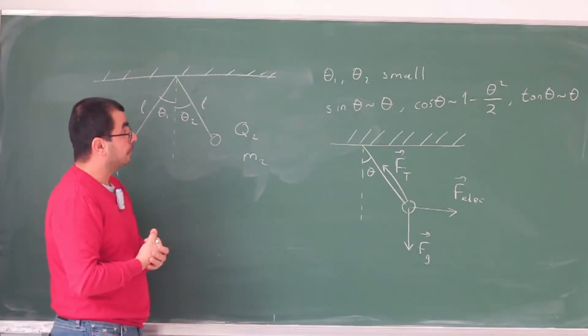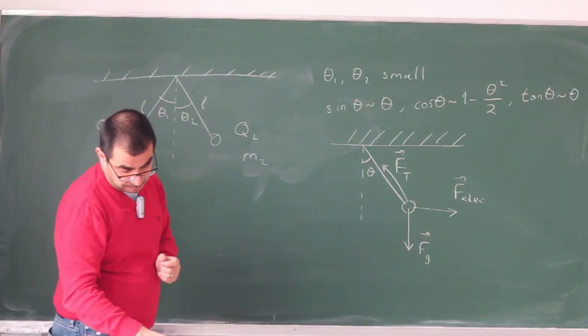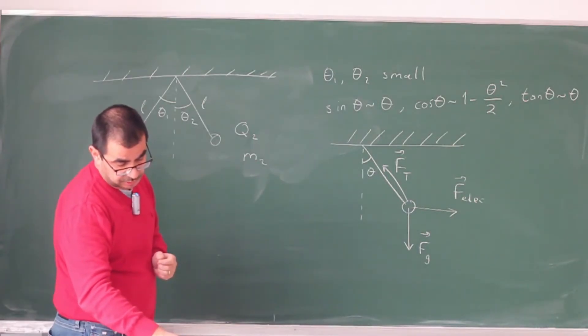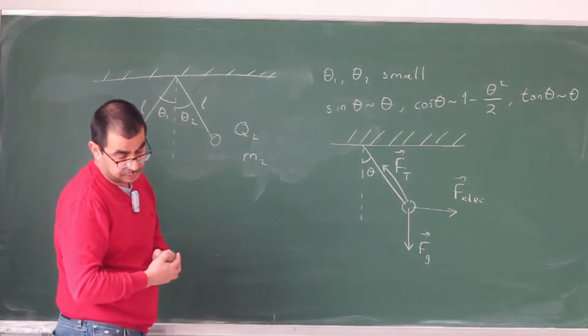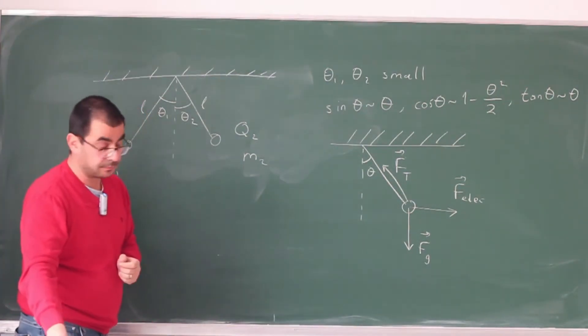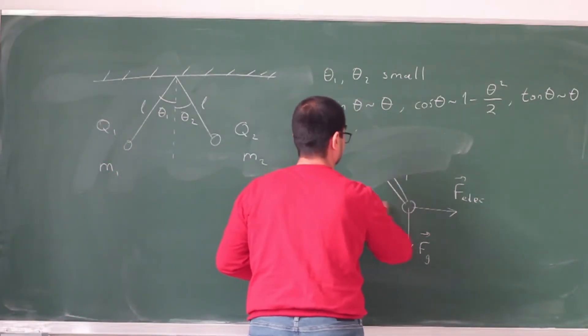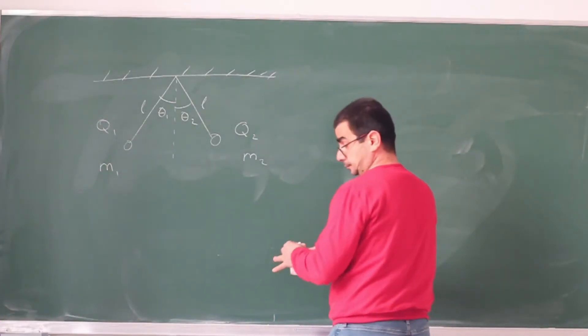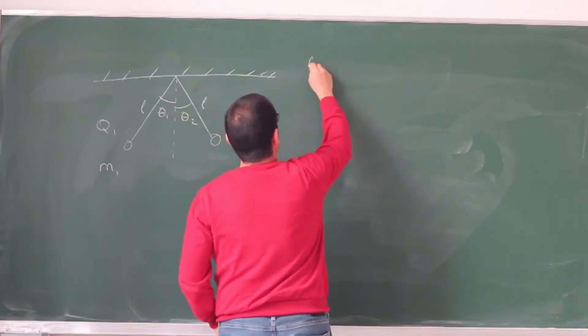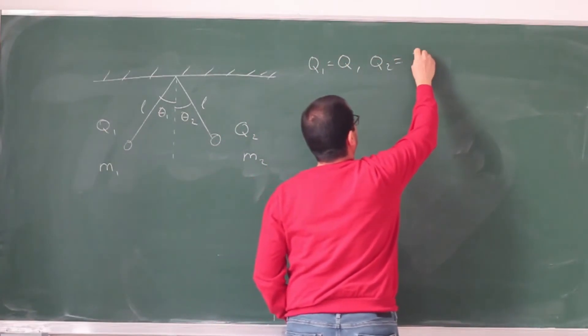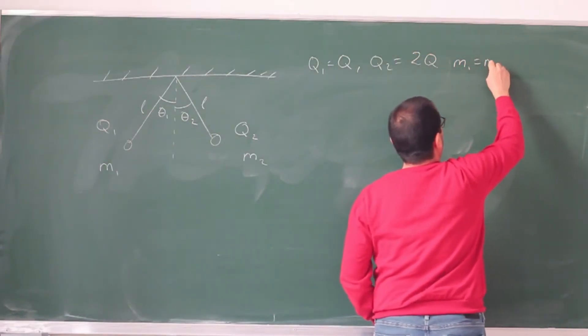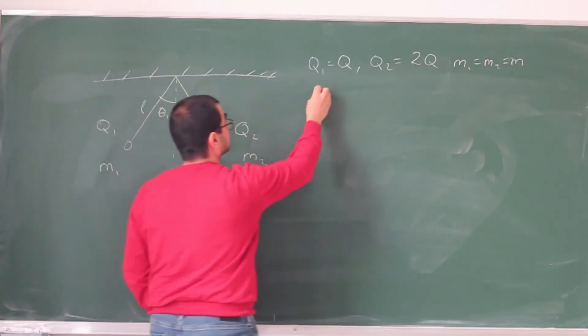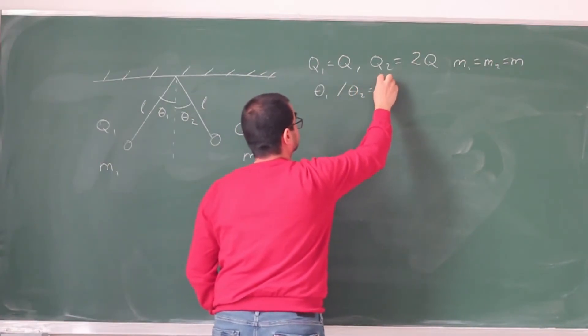Alright, so for this problem, they are actually asking for a number of cases. In part A, they are saying that one charge is Q, the other charge is 2Q, and the masses are equal, and they're asking for the ratio theta1 over theta2. So Q1 is equal to Q, Q2 is equal to 2Q, and M1 and M2 are both M. And they're asking for the ratio theta1 over theta2. This is part A.